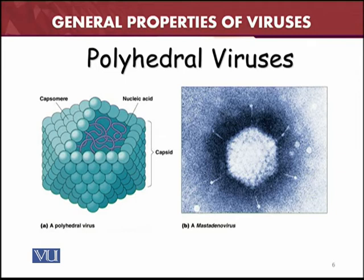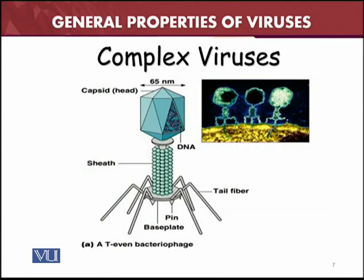Polyhedral viruses have different corners. Taking the example of the adenovirus, on the left side you can see the shape with clearly visible corners. It contains the nucleic acid and the capsid made up of capsomeres. The electron microscope image also shows how the adenovirus looks.